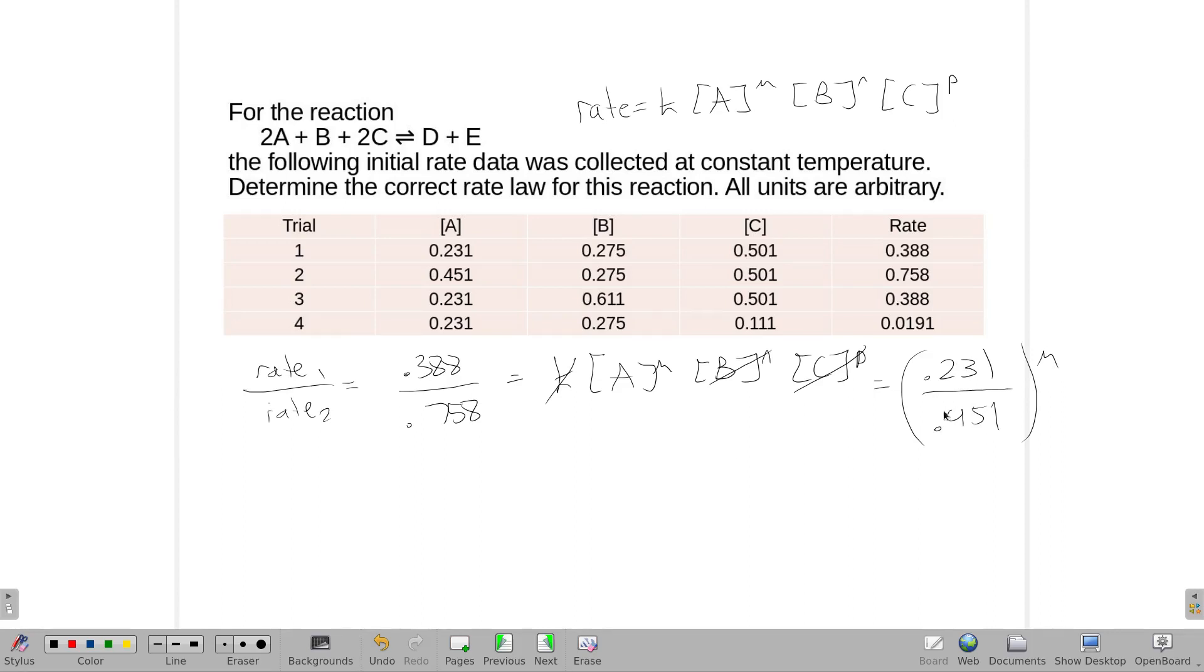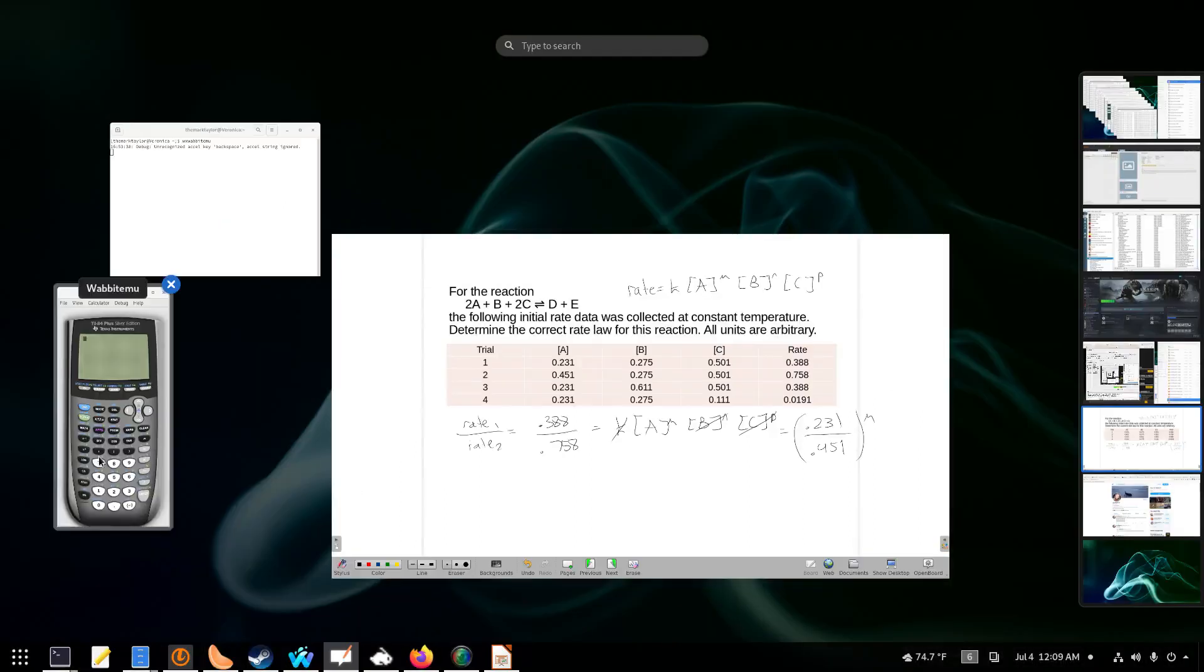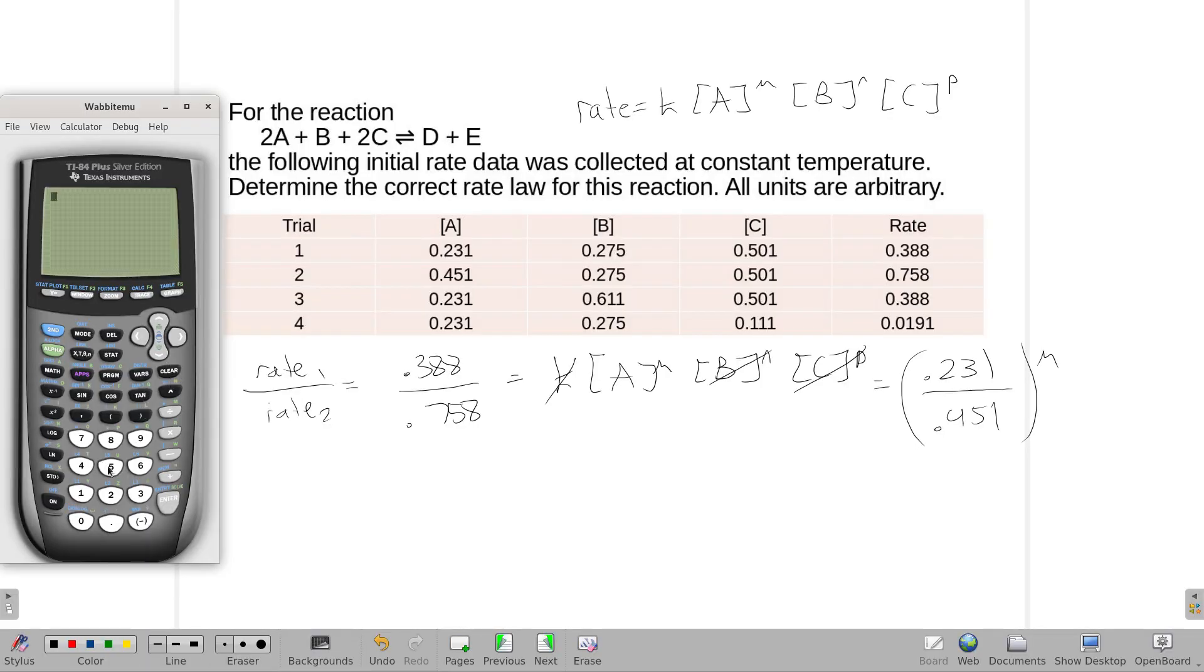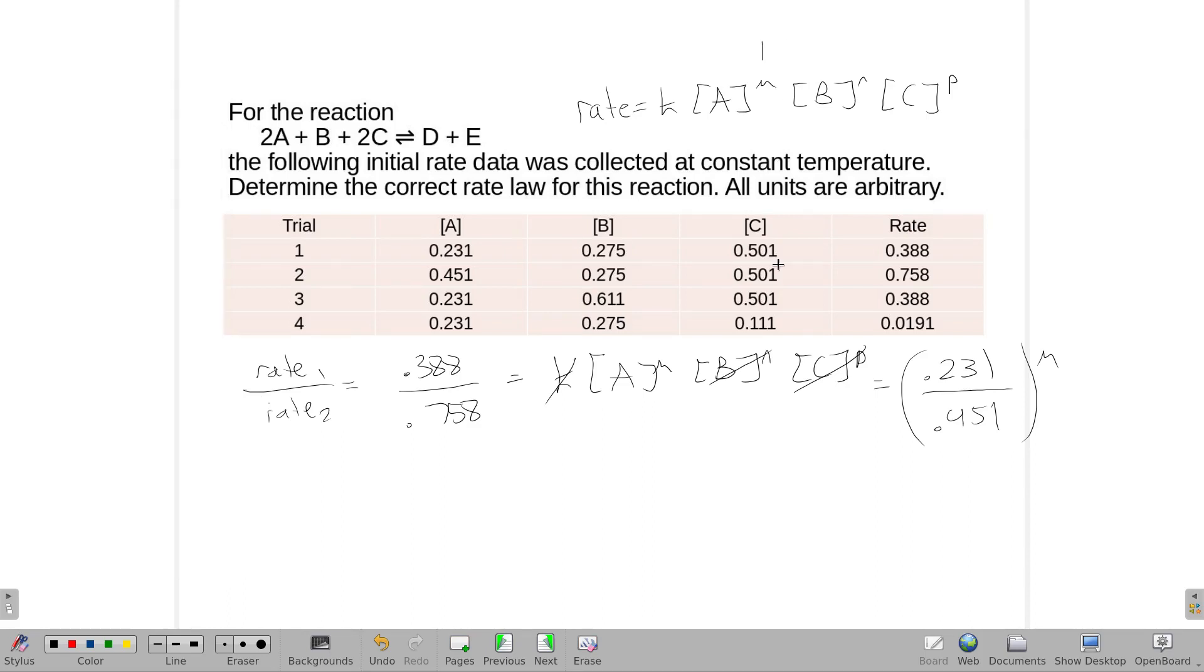Now I'm just going to solve for M. If all things well and good, it's going to be a nice integer. So 0.388 divided by 0.758, 0.511, and then 0.231 divided by 0.451, 0.512. That's a 1 to 1. I'm going to say my M is 1.